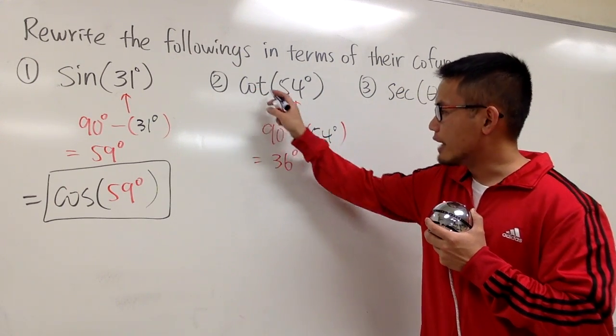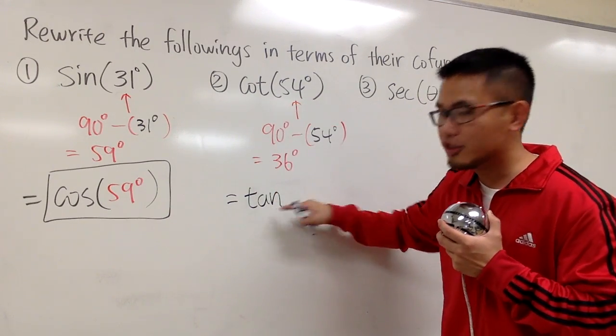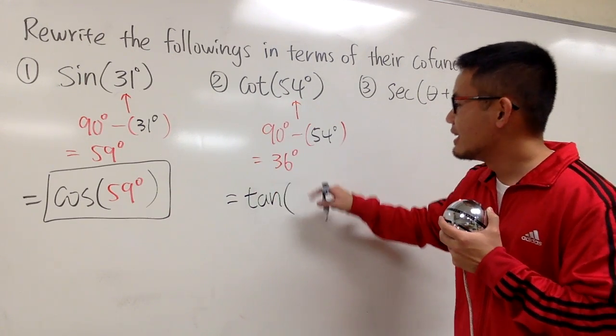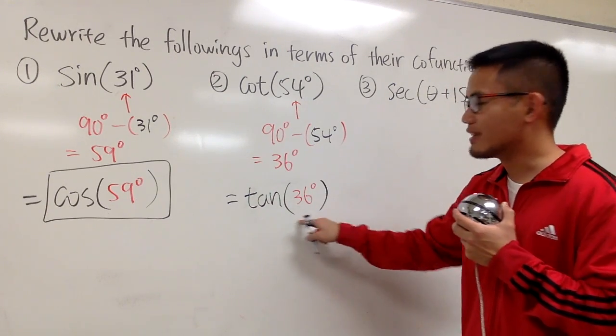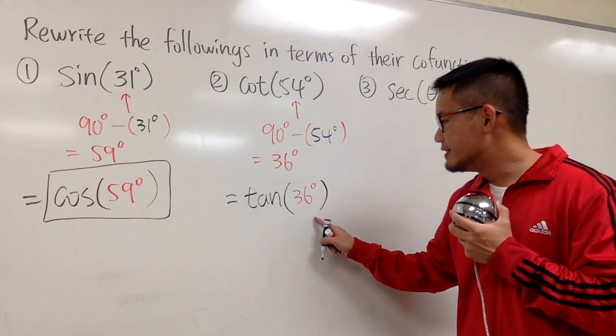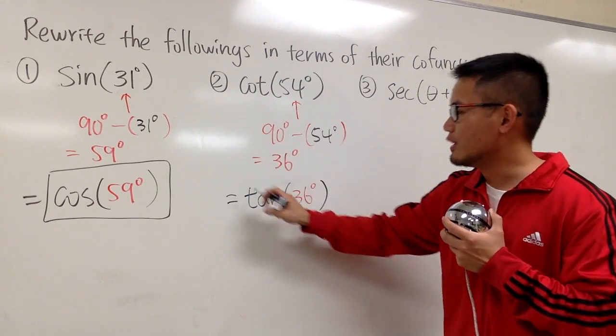And for cotangent, we will end up with the regular tangent, because they have co-functions of each other. And then, I will have the 36 degrees right here for the regular tangent. Tangent of 36 degrees is going to be the same as cotangent of 54 degrees.